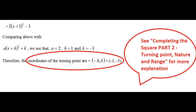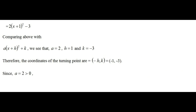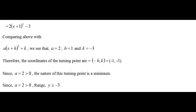So the coordinates of the turning point are (minus 1, minus 3) — remember the result is (minus h, k). If you're not familiar with this concept, watch part 2 of the completing the square video — I'll leave a link in the description below. Our a value is 2, which is greater than 0, so the nature of the turning point is a minimum. The range is y greater than or equal to minus 3.